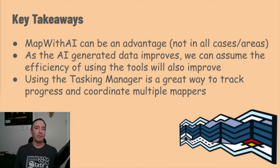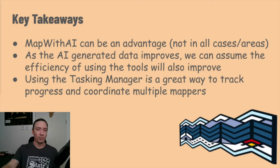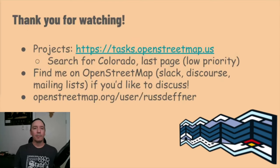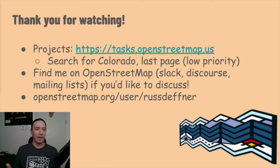But maybe the biggest key to completing structures in Colorado is the Task Manager, as it is a proven method for collaborating on large projects with multiple contributors. Mapping buildings in OpenStreetMap offers various methods, each with its own unique advantages. At this point, the projects I've created allow the mapper to pick which editor they prefer rather than restricting to the AI editors. If you want to reach out with any questions or potentially collaborate on this effort, my info is there. Thank you, enjoy the rest of the conference.